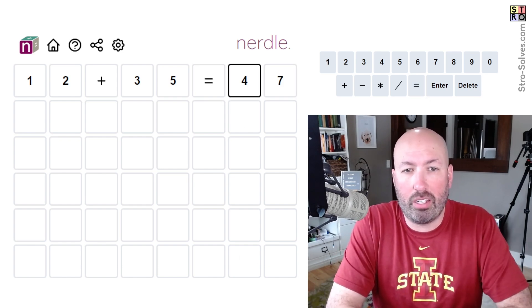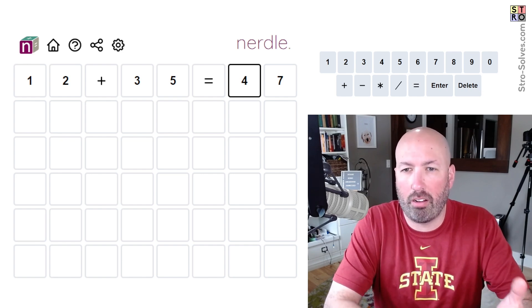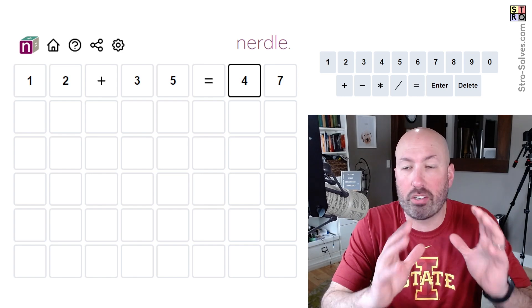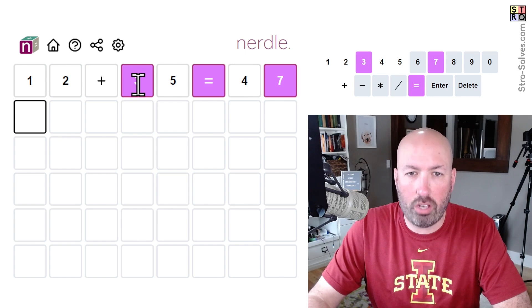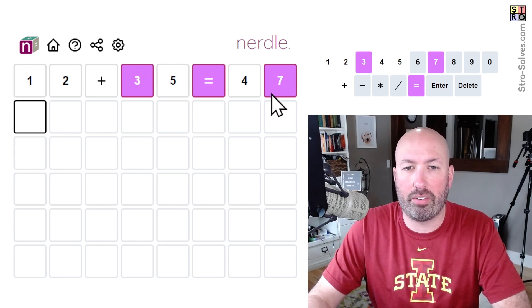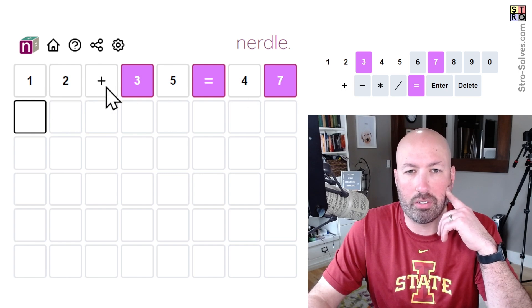It gets a bunch of unique numbers and I tend to like using the smaller numbers because I think it eliminates and limits your options a lot when you don't have very many smaller numbers. So okay, the three, the equals, and the seven are in the answer but not in those spots. The one, two, four, and five are not in the answer. There's no addition.